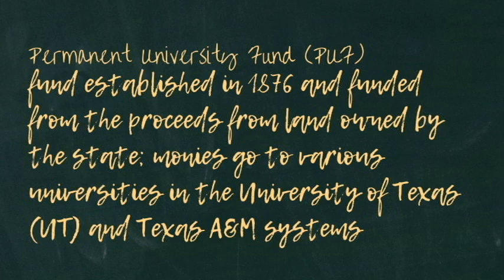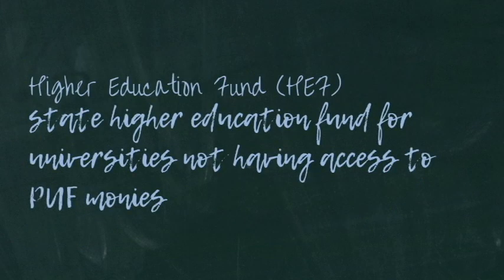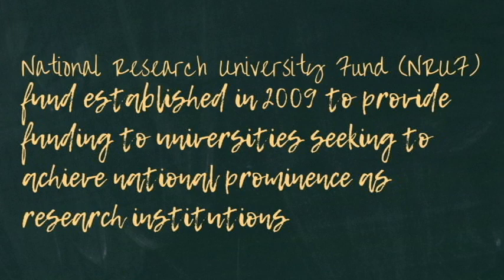In 1999, a constitutional amendment authorized UT to channel investment income into the AUF. Two-thirds of AUF monies go to the UT system and one-third goes to the Texas A&M system. The first obligation of any PUF income is to pay debt service on outstanding PUF bonds. The Higher Education Fund (HEF) is for universities without access to the PUF, funded through the general revenue fund. The Texas Higher Education Coordinating Board makes recommendations to the legislature for budgetary allocation to each school out of the HEF.